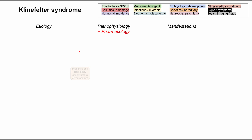The core feature of Klinefelter syndrome is the presence of a Barr body — this inactivated X chromosome. If we do a karyotype on somebody with Klinefelter syndrome, we'll see 47XXY. A normal male has just XY, but in Klinefelter they have that additional X chromosome. In rare cases, you can get 48XXXY or even 48XXYY, but those are exceedingly rare and it's usually 47XXY.